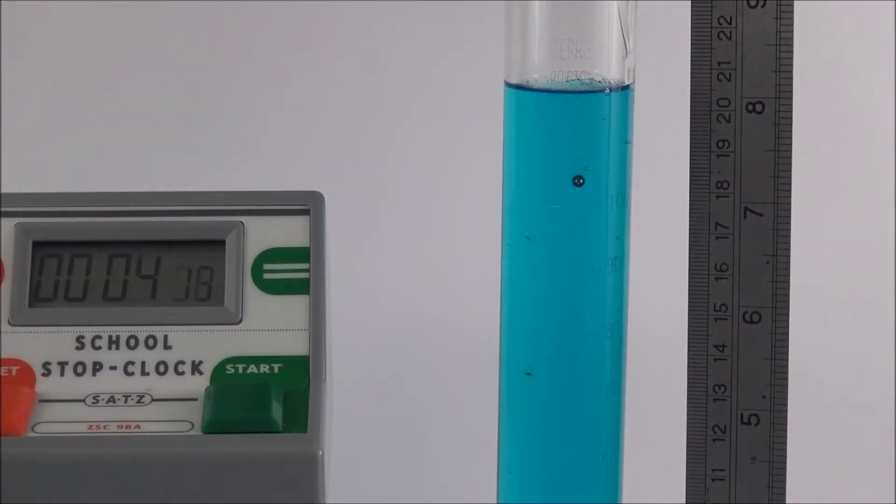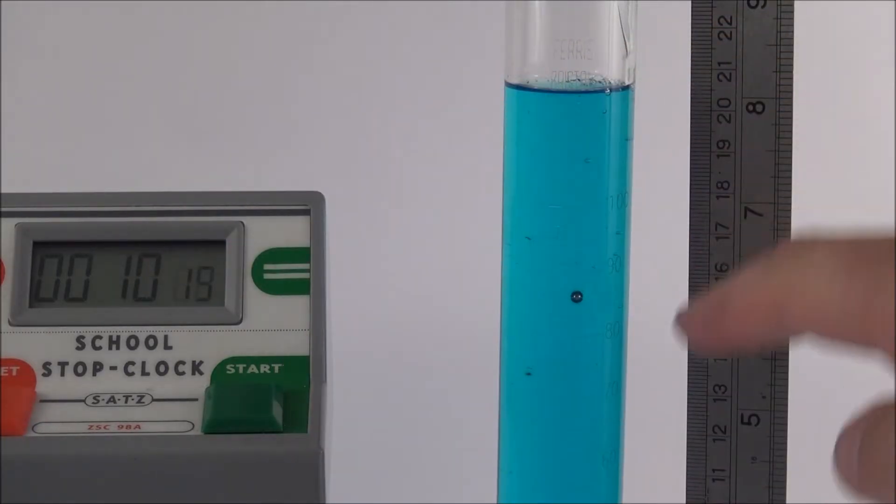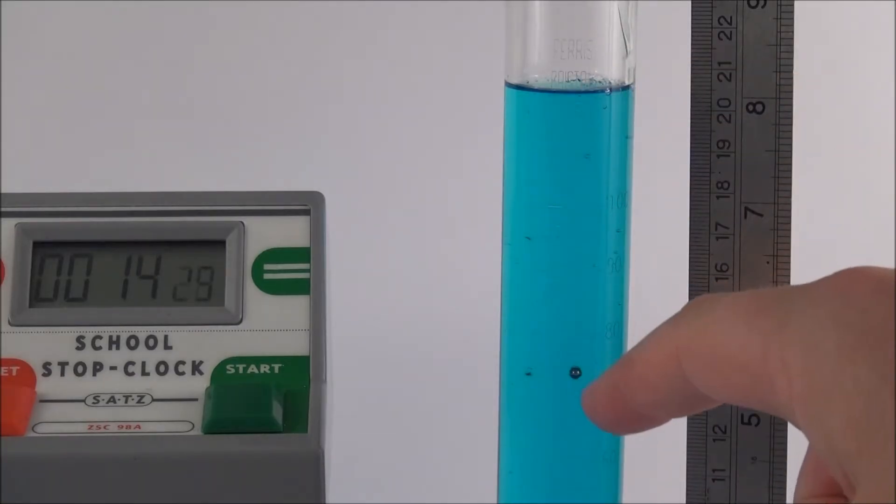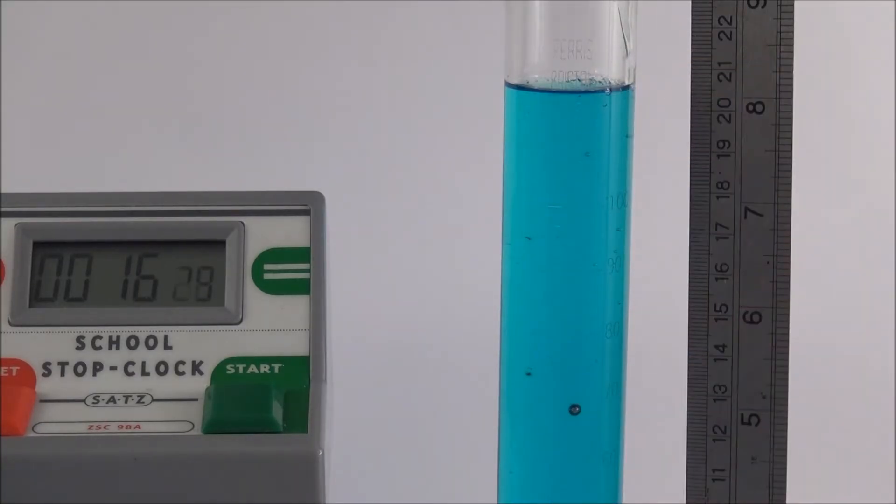Now there's a practical you can carry out where you're looking at the terminal velocity of an object falling through a viscous fluid. So here what we're doing is timing it. We can measure the distance traveled so we can work out its velocity at different times and eventually we can work out its terminal velocity when the forces on it are balanced.